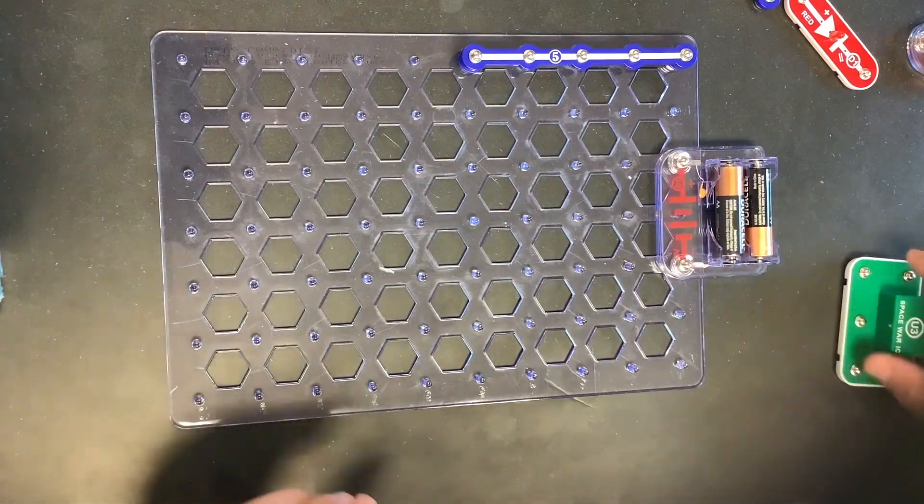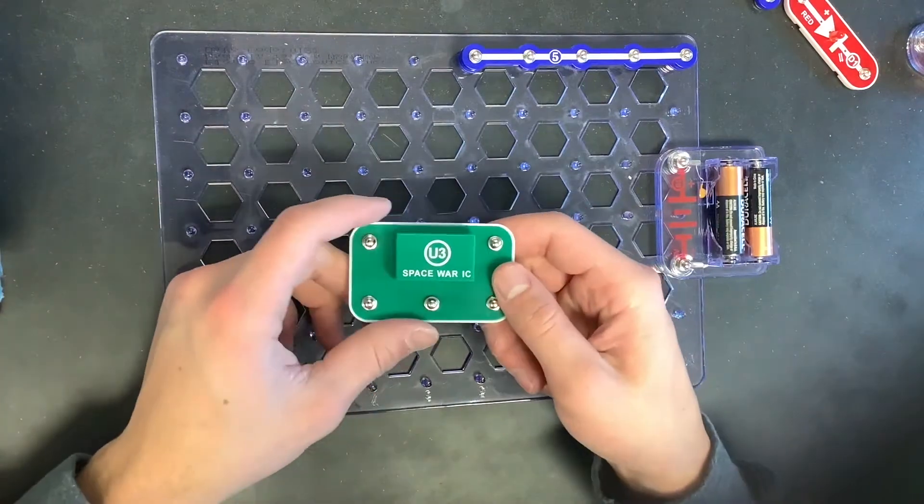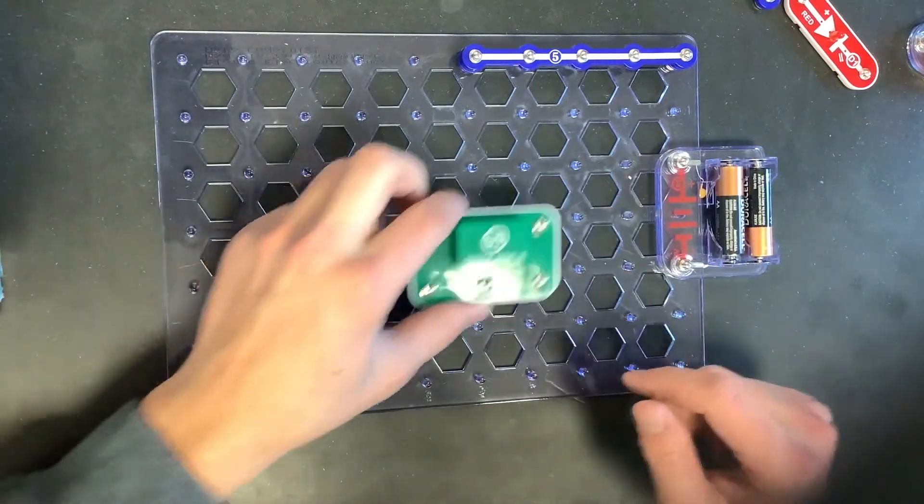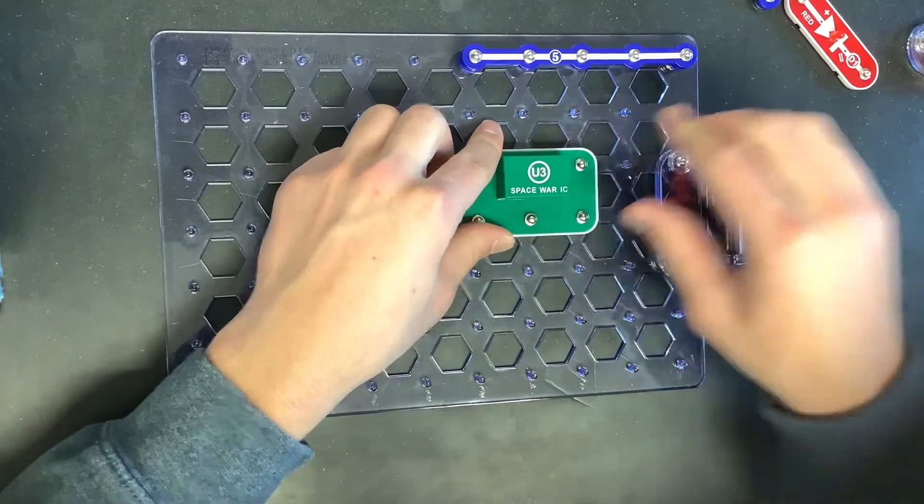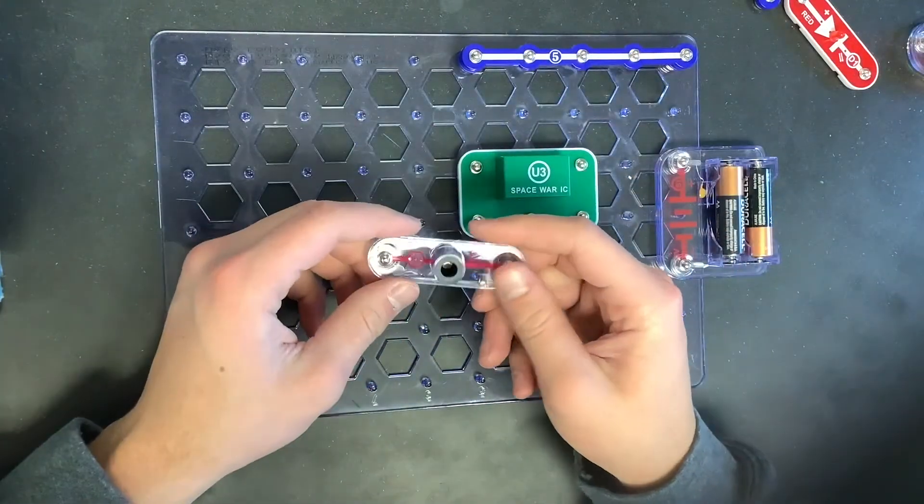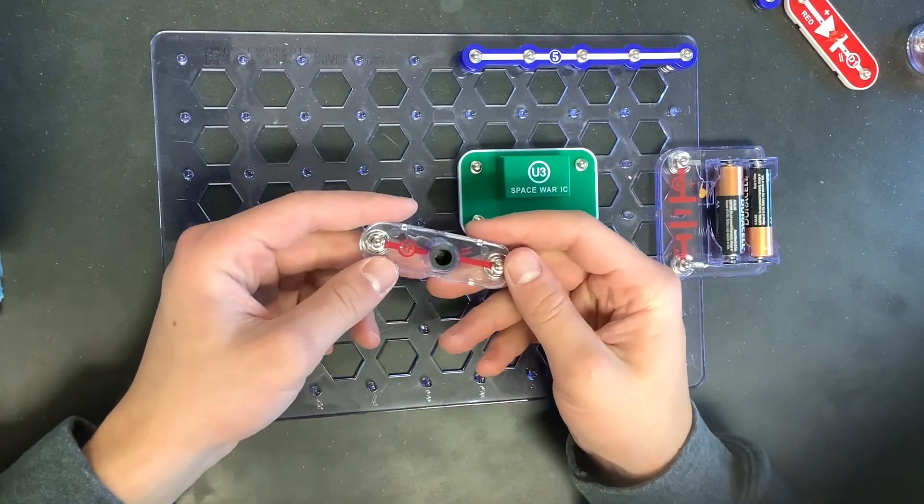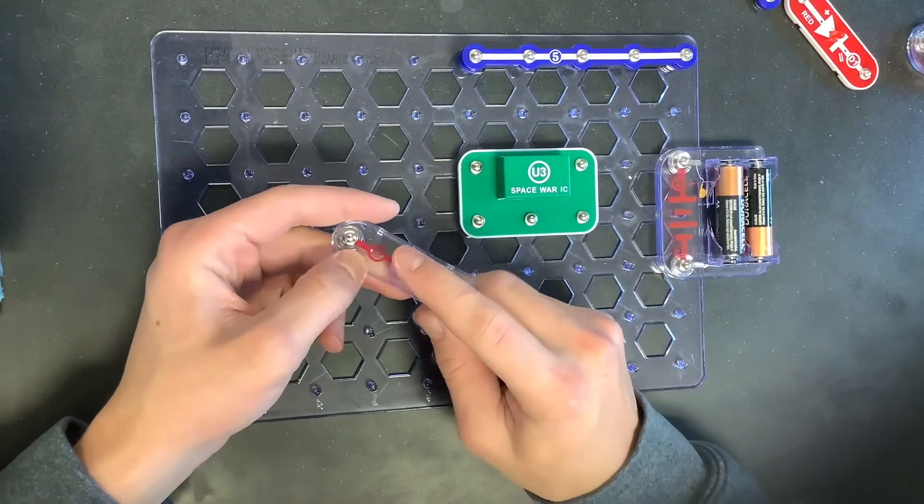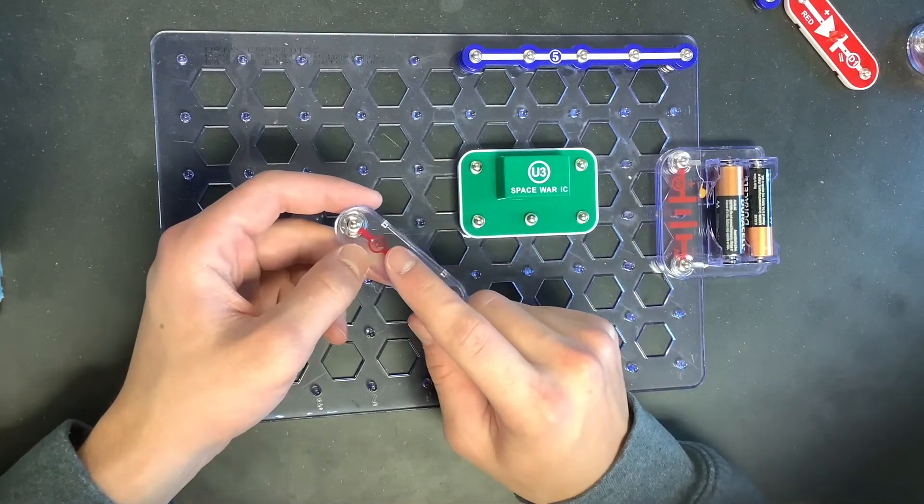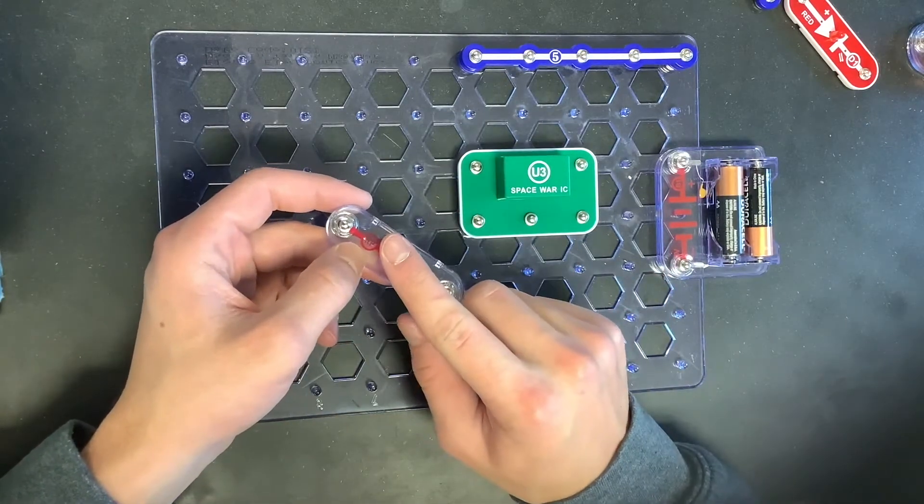And then this also introduces this alarm chip. And you'll see what this does here in a second as well. And then this also introduces this photoreceptor. So things will change when you cover that little hole with your finger.